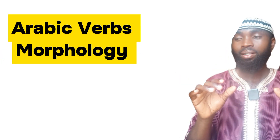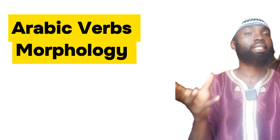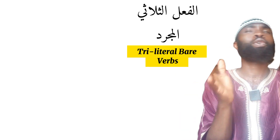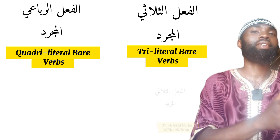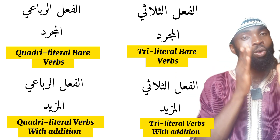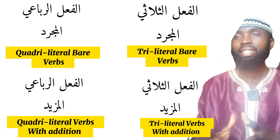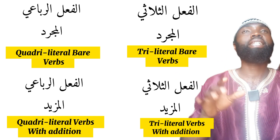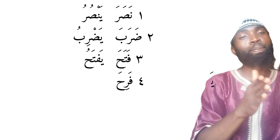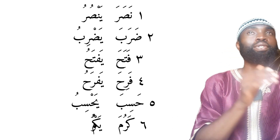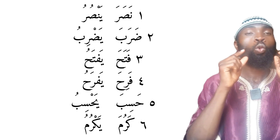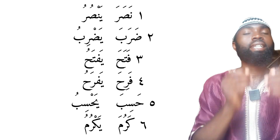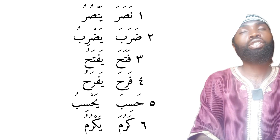Assalamualaikum warahmatullahi wabarakatuh. Today insha'Allah I want to continue with our series on Arabic verb morphology, where we have been discussing the different types of verbs: al-fa'ilu al-thulathi al-mujarrad, al-ruba'i al-mujarrad, al-thulathi al-mazid, and al-ruba'i al-mazid. We began with al-thulathi al-mazid, mentioning the awzan — the scales for measuring verbs under each category — and brought many examples so that when we come across any verb, we know its category and how to form its present tense.